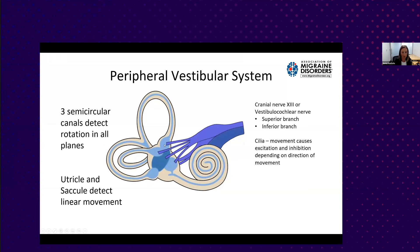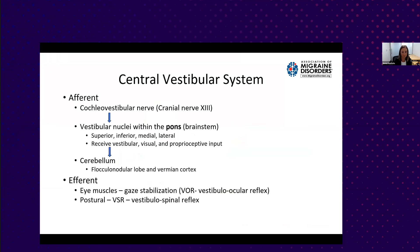From the eighth cranial nerve, signals go to the vestibular nuclei within the pons, at the pons and medulla junction in the brainstem. That is also where we receive visual and proprioceptive input. The brain uses all of these: visual input, and then proprioceptive and tactile input—such as muscle stretch and pressure on the footbed—which tells us where we are in space.